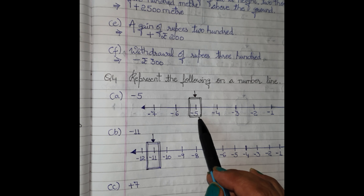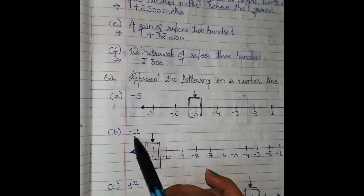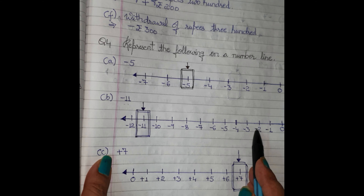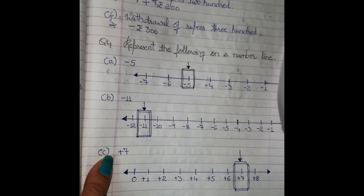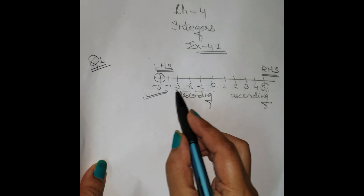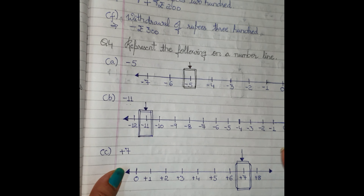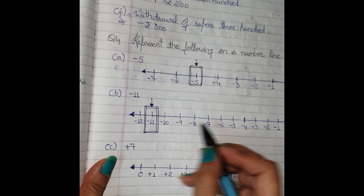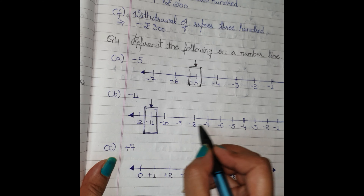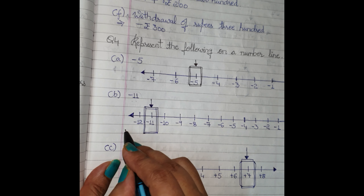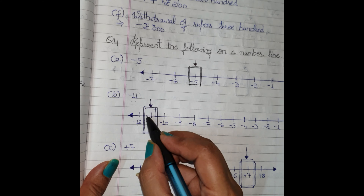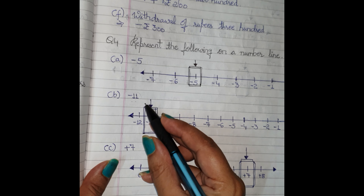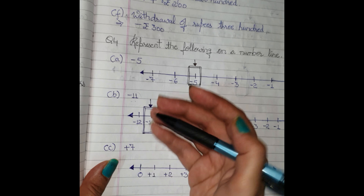For part b, minus eleven: draw the number line towards the left (negative side). Start from zero and move left — minus one, minus two, and so on until minus eleven. Take one extra step to minus twelve. Draw a box on minus eleven and put an arrow mark on it to represent it.